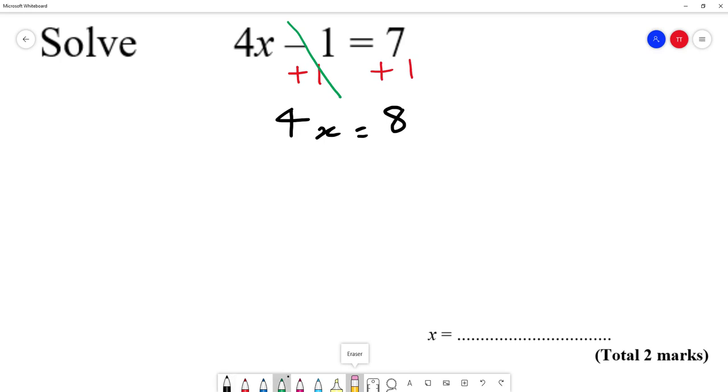Don't forget, 4x means 4 times x, so we divide by 4 on both sides of the equation like so. And x equals 2.